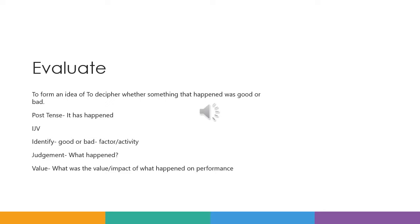That means you're using IJMV to identify whether it's good or bad — the factor and what activity it's in. For the judgement you're seeing what happened — not what's going to happen, not the possibilities like in analyse. It's what actually happened. And the value is what is the value impact of what happened on performance — if you're making a judgement of what happened, what was the value, what was the impact of what happened on performance?